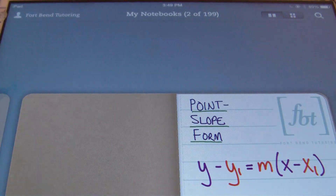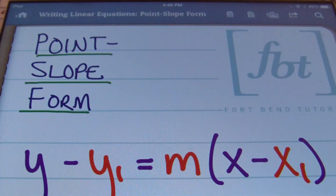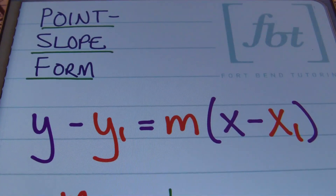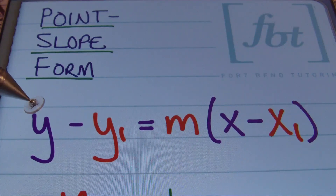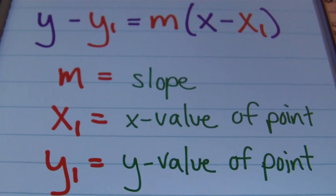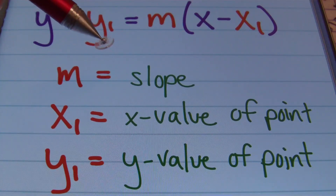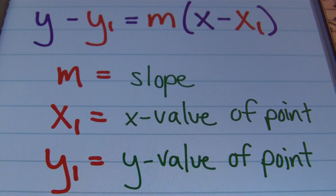The point-slope form of a linear equation — in other words, a line. When you have graphs of lines, sometimes your instructors, your teachers, or your text may want you to write the equation of the line in point-slope form. The formula is: y minus y1 equals m times x minus x1. The variable m is commonly known as the slope.